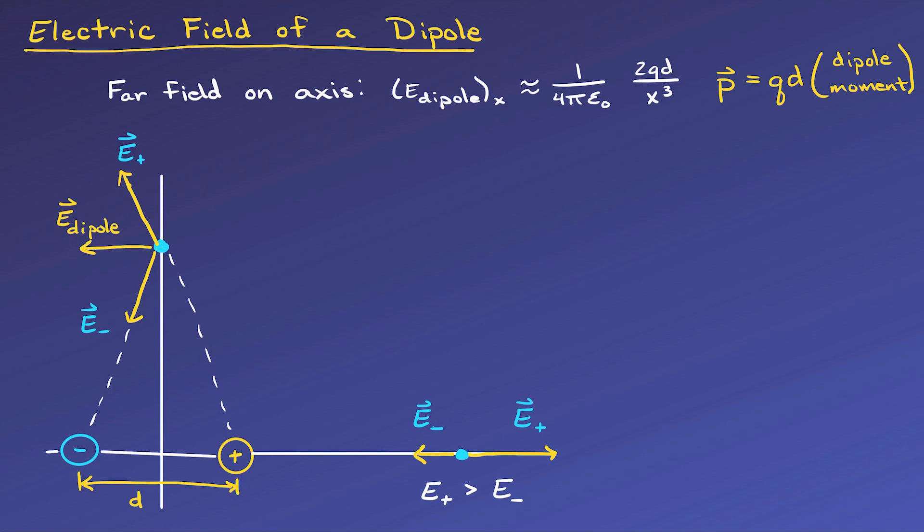If you think about it, q and d are the defining characteristics of a dipole. If you know the magnitude of the positive and negative charge of the dipole, and you know the separation distance, you pretty much know everything about the dipole, except for the orientation that we'll account for in a second. Keep in mind our definition of the dipole is equal positive and negative charges, and they're separated by a small distance.